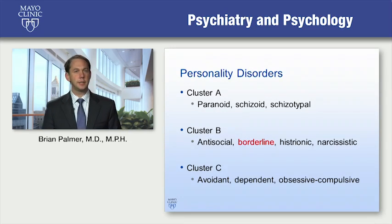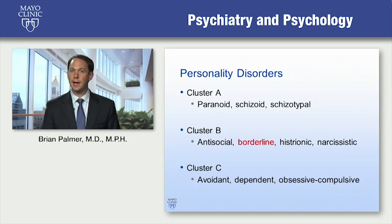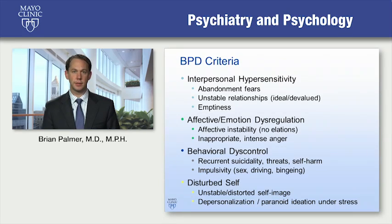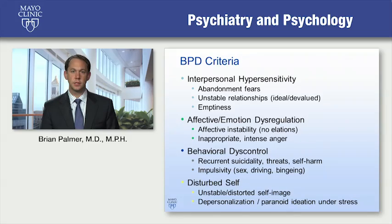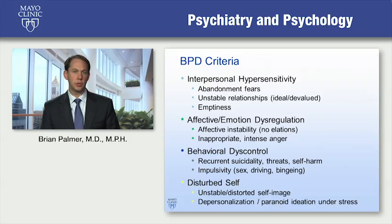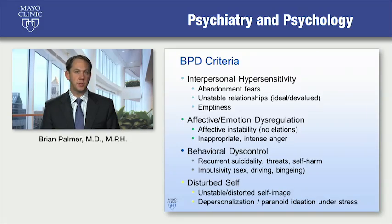Considering personality disorders, borderline is a cluster B personality disorder, characterized by five of the nine criteria listed on the screen. I've grouped these in four areas. First is interpersonal hypersensitivity: abandonment fears, unstable relationships, and emptiness. In reaction to the interpersonal context, the other symptoms emerge — affective and emotion dysregulation, instability of affect without elation, and inappropriate intense anger.